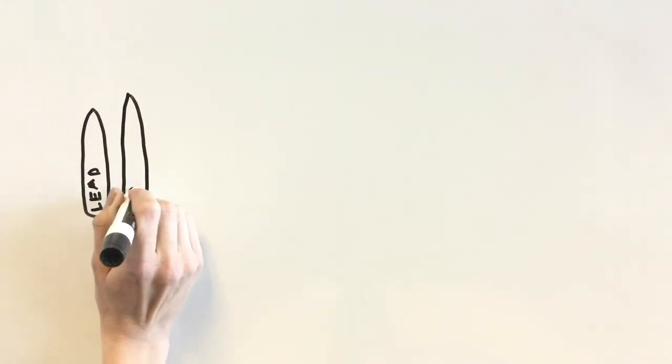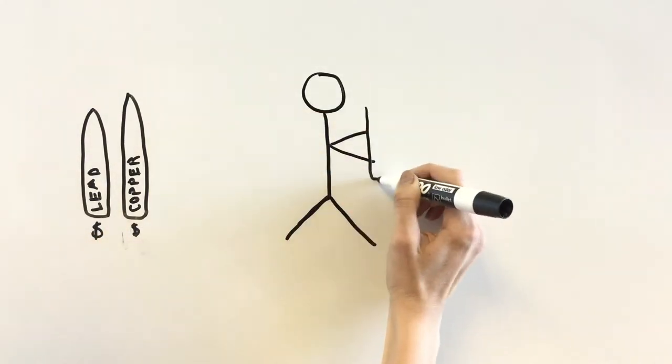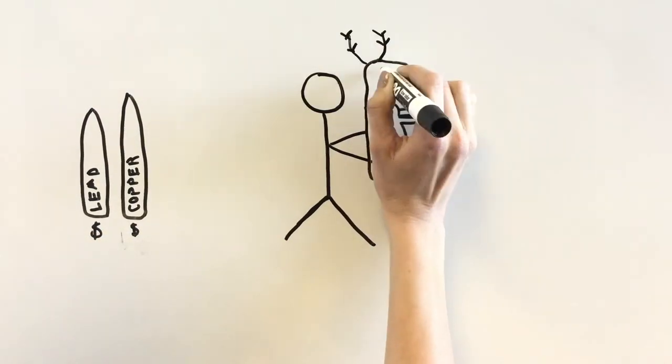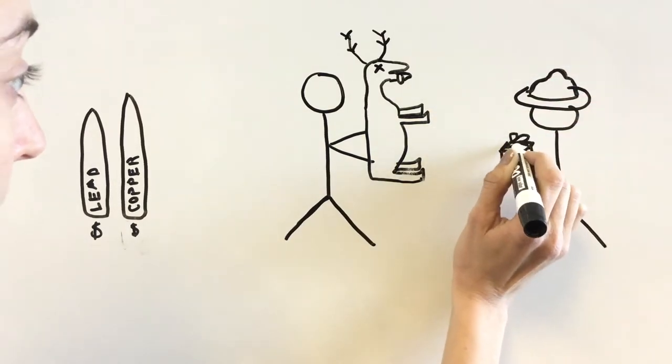Some state game and fish departments have even started offering discounts on copper bullets, or prizes for removing all parts of an animal from the environment if it was shot by a lead bullet.